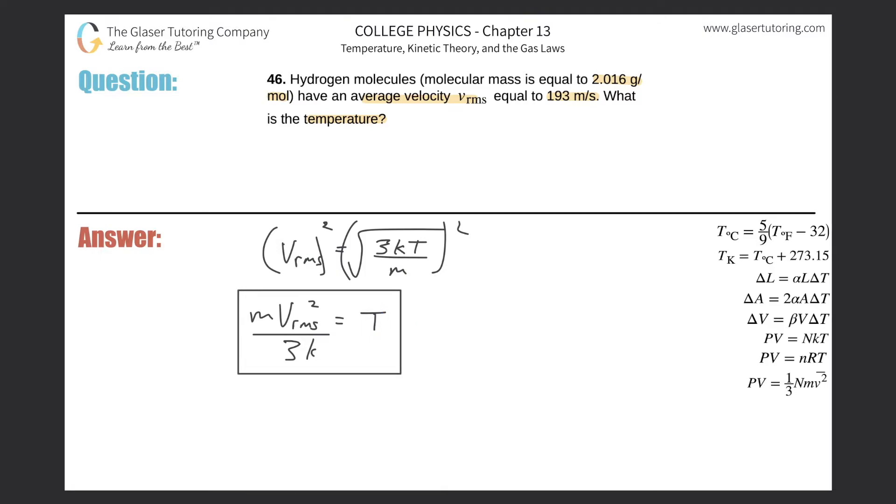We do know the velocity—they gave it to us. Fortunately it is in the right unit, so that's fine. k is just the Boltzmann constant. Did they tell us the mass of a molecule? No.